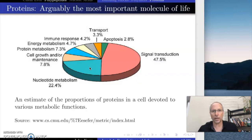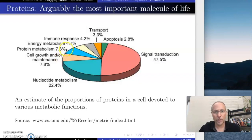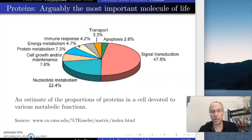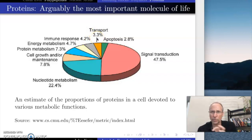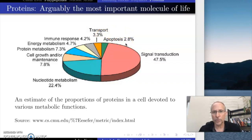The next one is nucleotide metabolism — building and breaking down RNA and DNA. RNA is more important than DNA in terms of total amount. So a lot of what your proteins are doing is controlling the DNA and RNA in your body. Cell growth and maintenance is a relatively small piece. Protein metabolism — that's proteins making other proteins. Energy metabolism involves proteins controlling ATP production. Immune response, transport across membranes, and apoptosis — programmed cell death — are also represented.